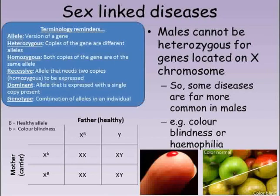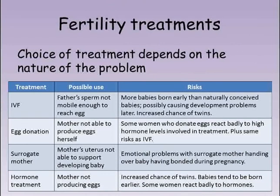Sometimes, people struggle to conceive children naturally, and there are a range of different treatments available. The choice of which fertility treatment is most appropriate will of course depend on the nature of the problem. For example, if a male's sperm are not mobile enough to reach and fertilise the egg, IVF can be used where the sperm and egg are mixed together in a dish before successful embryos are implanted back into the woman. If a woman is not able to produce eggs for some reason, the eggs can be taken from another woman who has agreed to act as a donor. IVF can then be carried out using sperm from the first woman's partner.